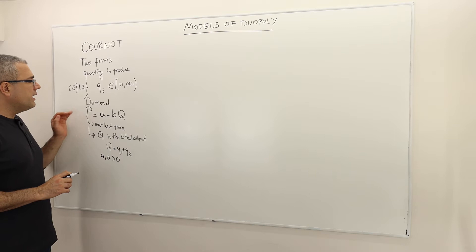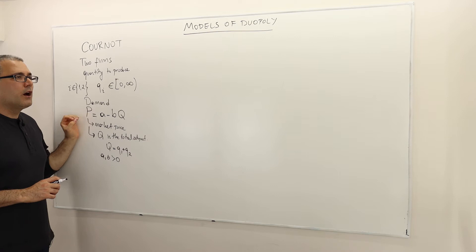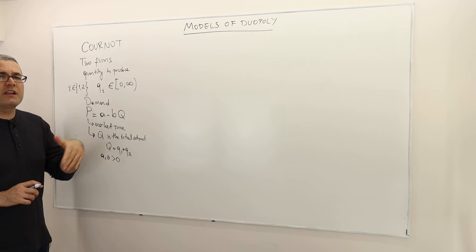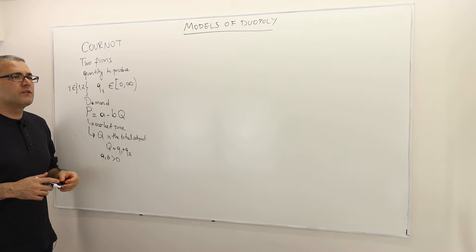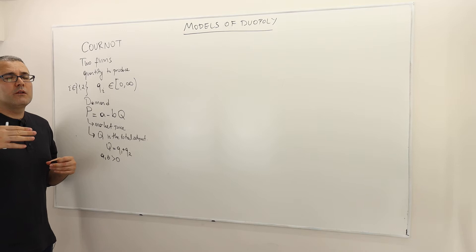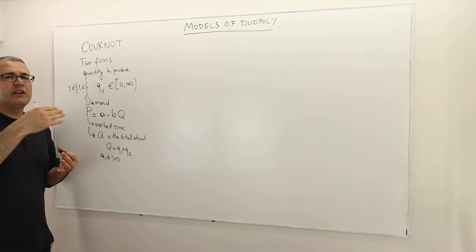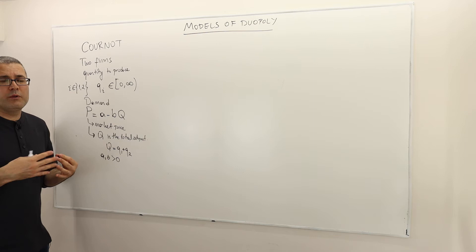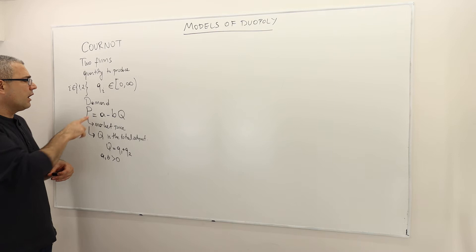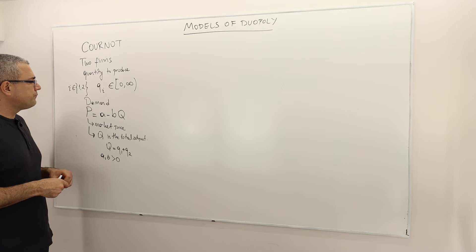This model makes sense in environments where producing the product requires a substantial amount of time and planning in advance. For example, if firms are producing automobiles, they need to decide how much to produce perhaps five or six months — or even a year — in advance. After they produce their quantities, market conditions such as a boom or a crisis will determine the market price according to the market clearing condition afterwards.